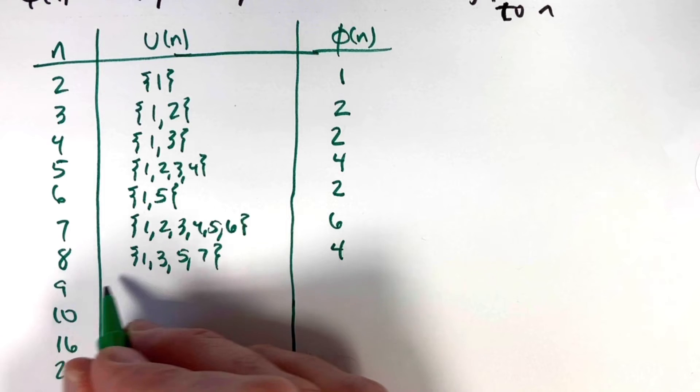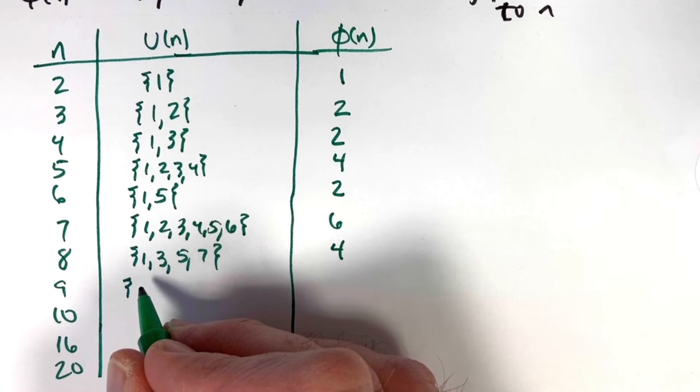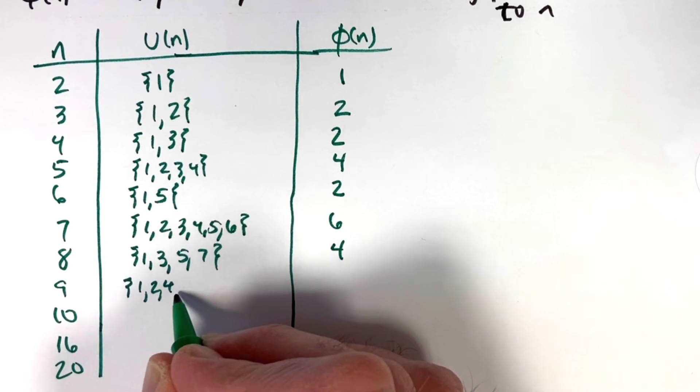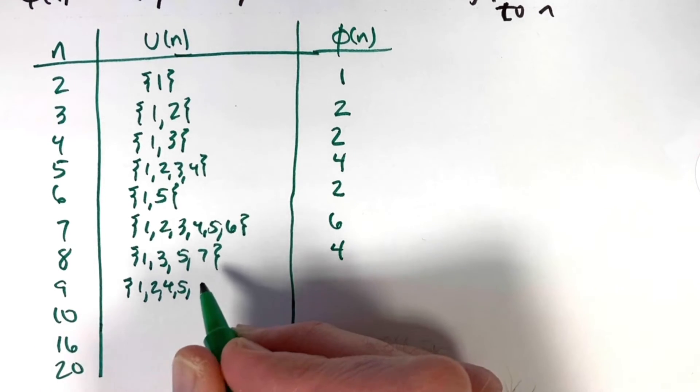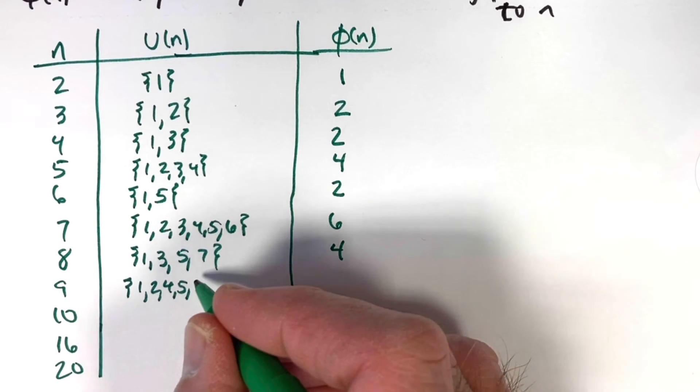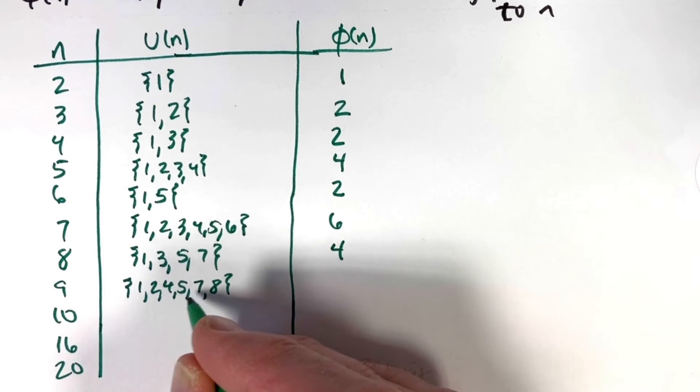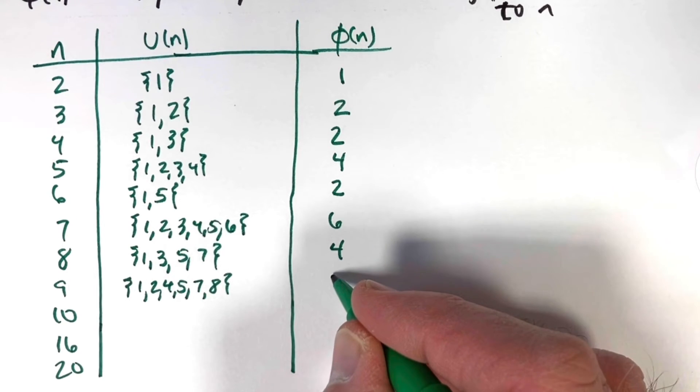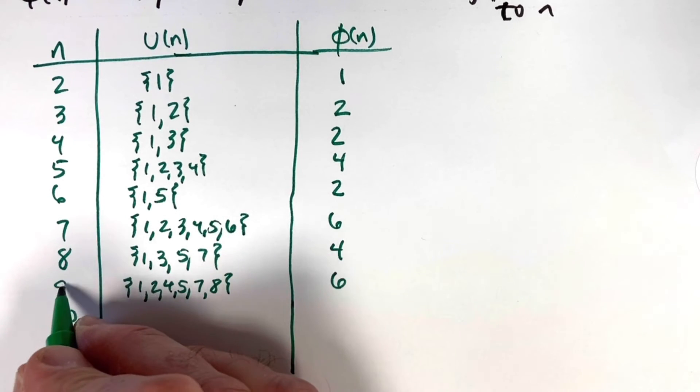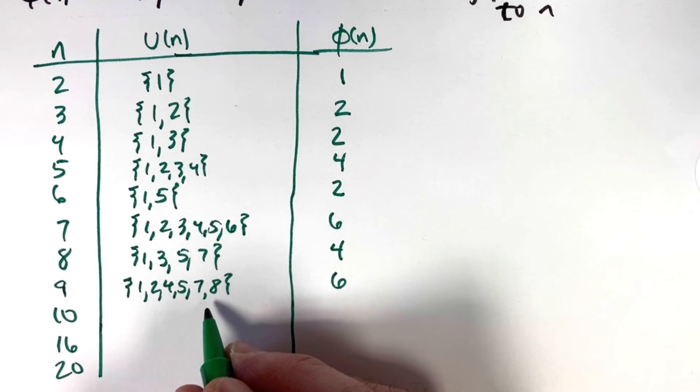When n = 9, which is 3², in U(9) we want to avoid powers of 3 except for 1. So it's 1, 2, skip 3, then 4, 5. We also want to avoid multiples of 3, so we avoid 6, then 7 and 8. How many such numbers are there? Six of them: 1, 2, 4, 5, 7, 8. So φ(9) = 6. It's a little less clear what the pattern is here, but we can list these numbers to figure out the answer.